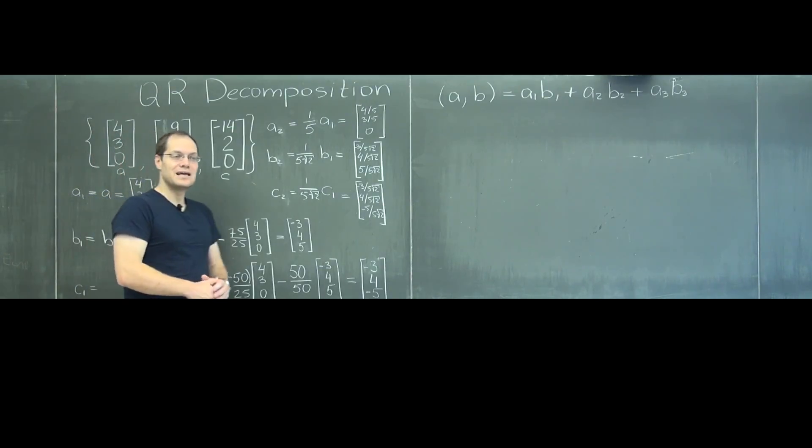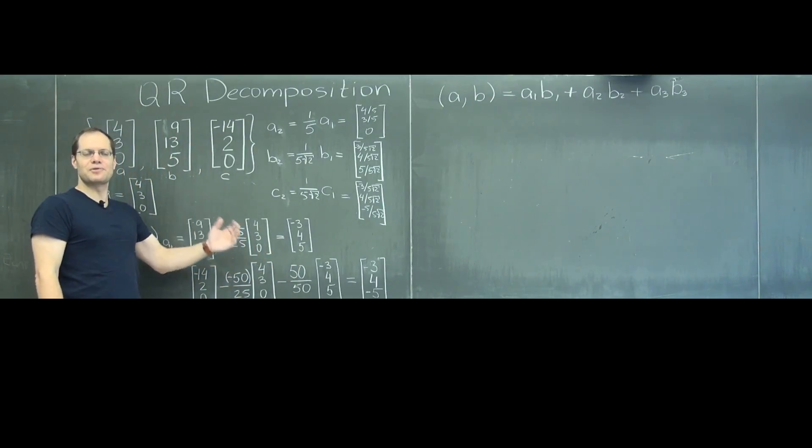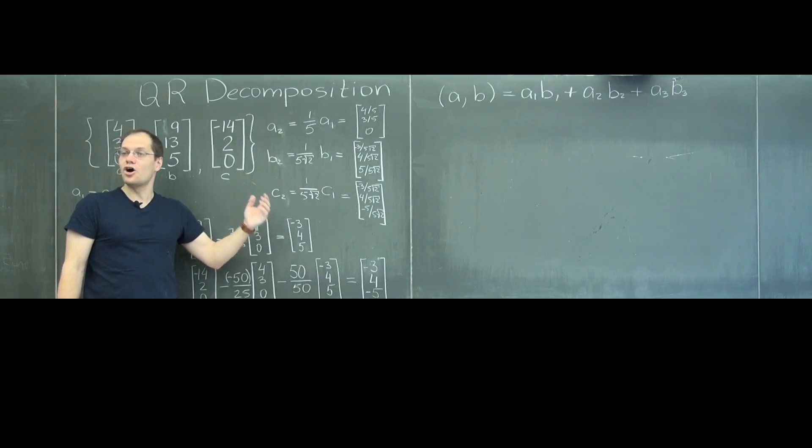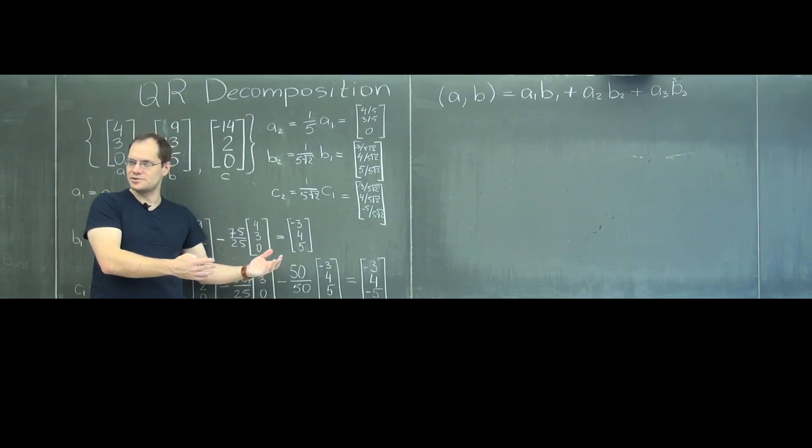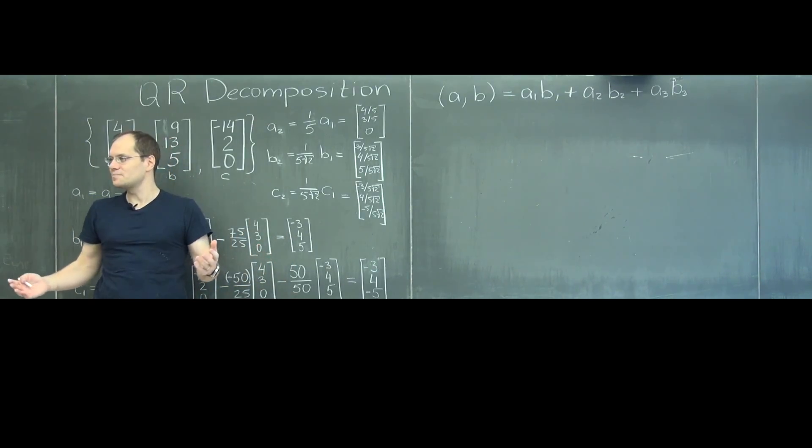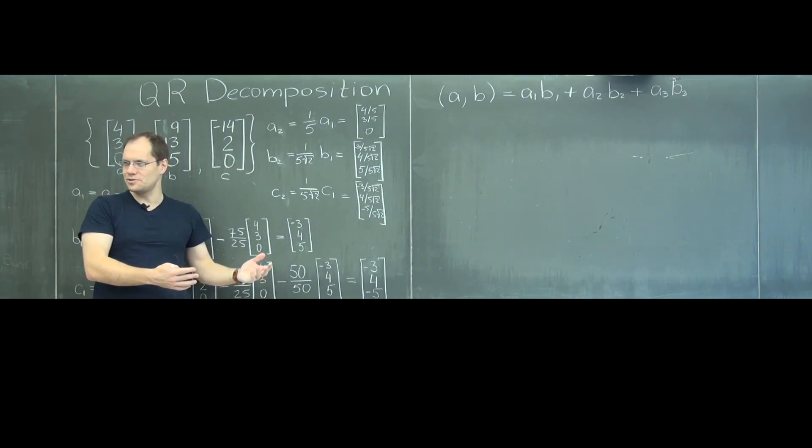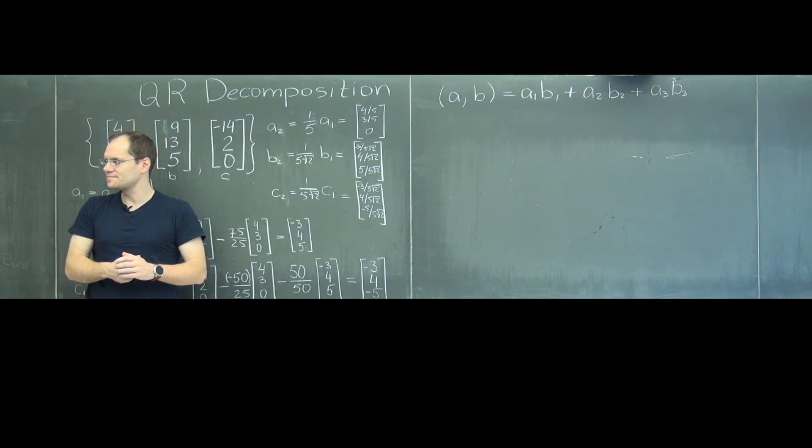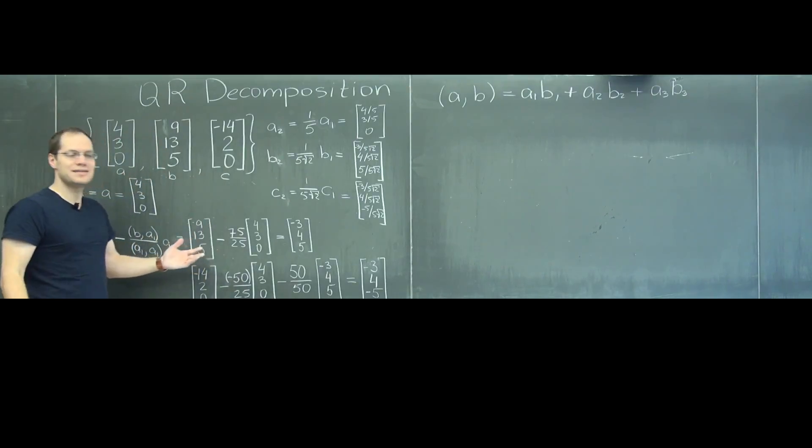Okay, this completes the Gram-Schmidt in this case, or the normalization procedure. So it's just another example. We've done one with polynomials, we went from our standard basis to Legendre polynomials for a certain inner product. Now we did just another example with the standard inner product in R3. So that completes this example.